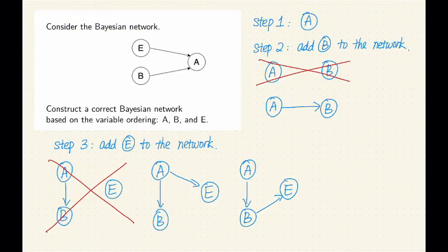So definitely, given A, B and E are not independent, this doesn't work. Alternatively, given B, are A and E independent? Well, knowing B, A and E are still directly connected, so they're not independent.